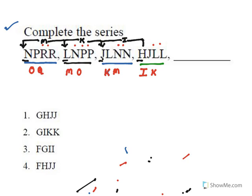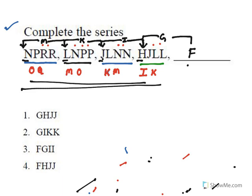After F comes G, which is omitted, and H is given. After H comes I, which is omitted, and J is given and repeated. So the missing segment is F, H, J, J. This is how we crack this kind of alphabetical series question — always find the pattern in how the series progresses.